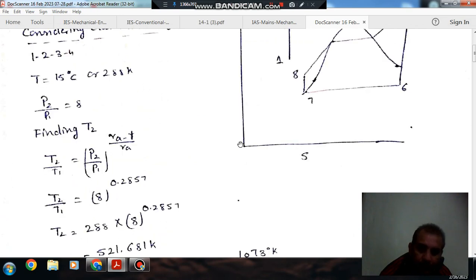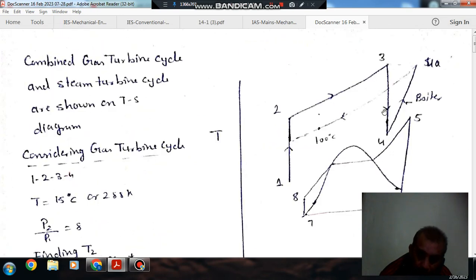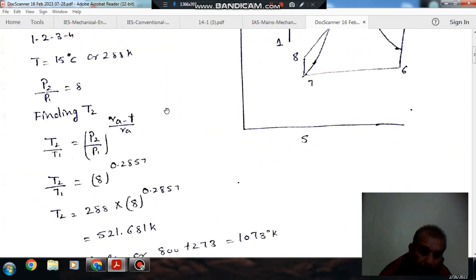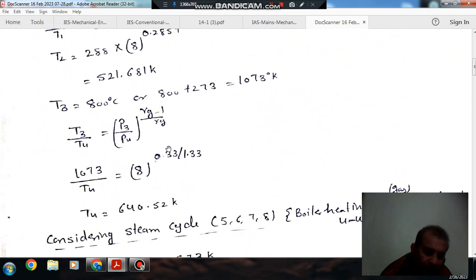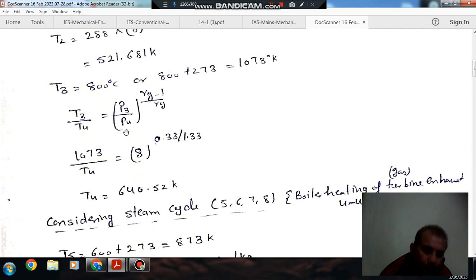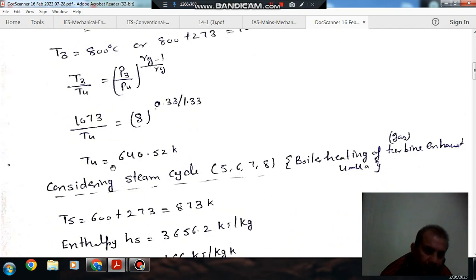And again the process in turbine is also isentropic. So T3/T4 = (P3/P4)^((gamma-1)/gamma). So putting the value of P3/P4 as 8 and T3 = 1073 K, we get T4 = 597.4 K. Now this is the exhaust temperature of the gas turbine cycle.